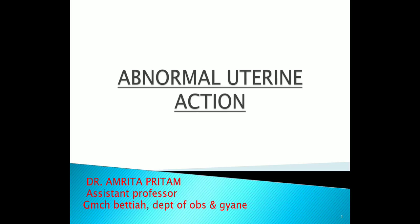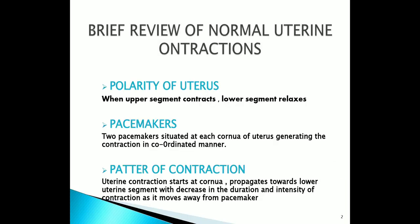Dear student, today I am going to speak on the topic abnormal uterine action. First, we should know a brief review of normal uterine contraction. In normal uterine contraction, polarity of uterus means when the upper segment contracts, the lower segment relaxes. Normally, there are two pacemakers, one situated at each corner of the uterus. The uterine pacemaker generates uterine contraction in a coordinated fashion. Uterine contractions start at the corner and propagate towards the lower uterine segment with a decrease in duration and intensity as it moves away from the pacemaker.